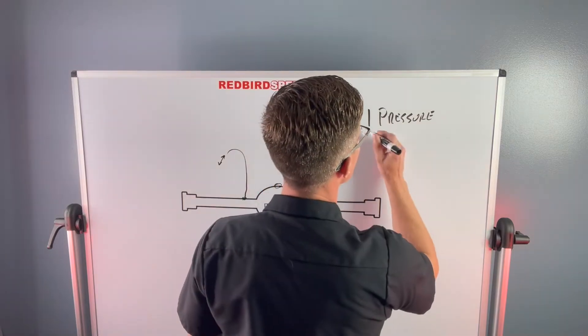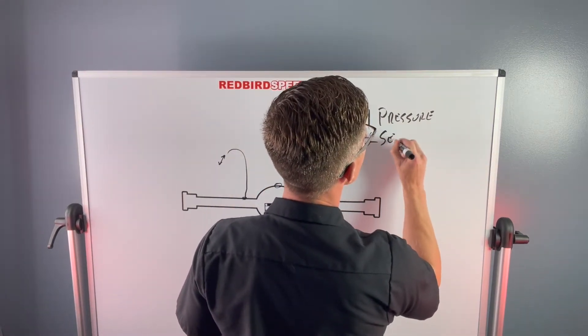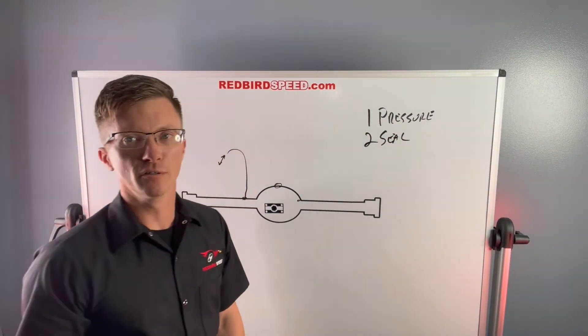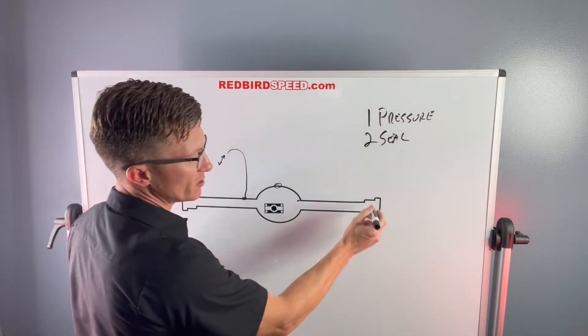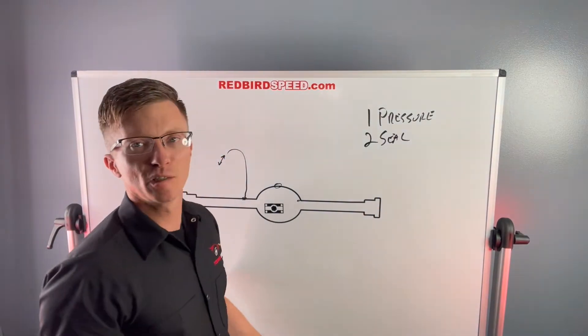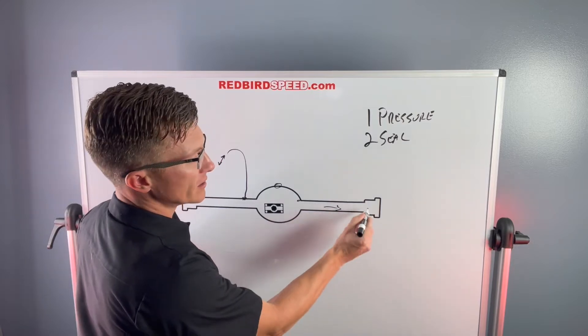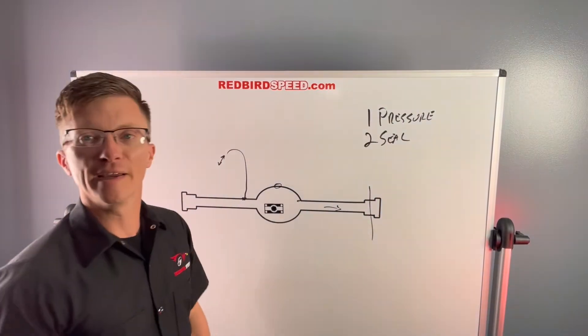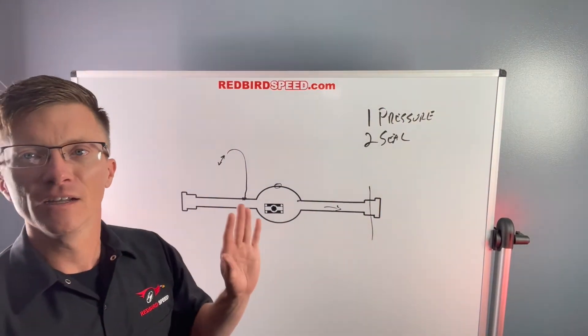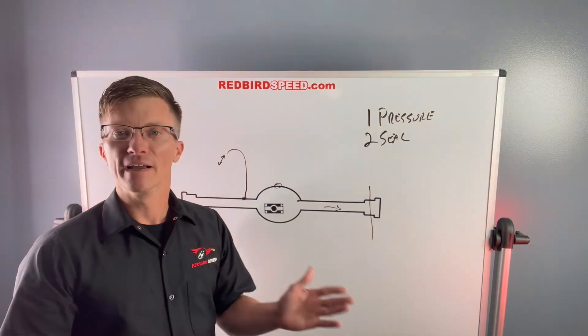All right. Number two, seals. Got a couple of seals here. One, being a housing end right here. There's got to be some way, you got oil sloshing up the tubes here. There's got to be some way to keep the oil from getting past that housing end, getting past the bearing and making it out.